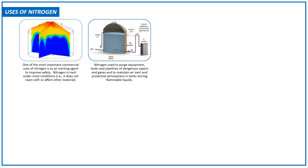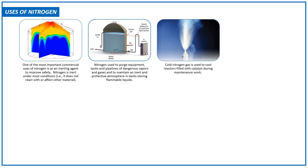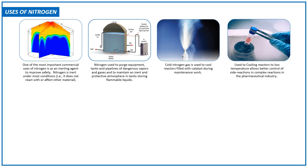Cold nitrogen gas is used to cool reactors filled with catalyst during maintenance work. Cooling reactors to low temperatures allows better control of side reactions in complex reactions in the pharmaceutical industries.